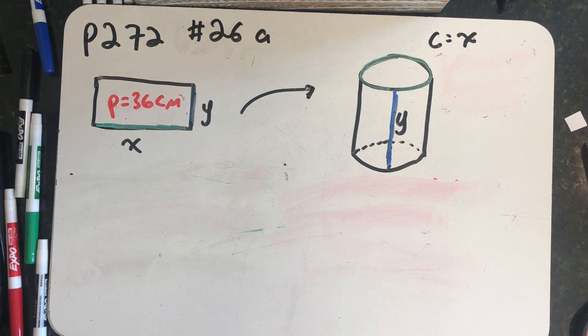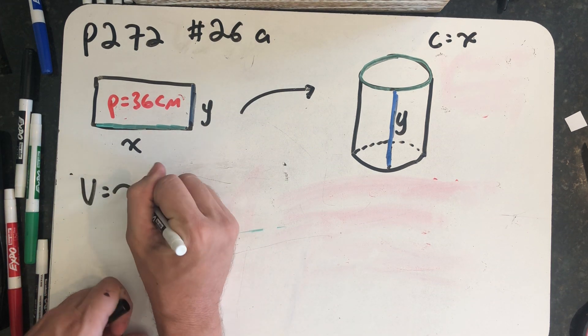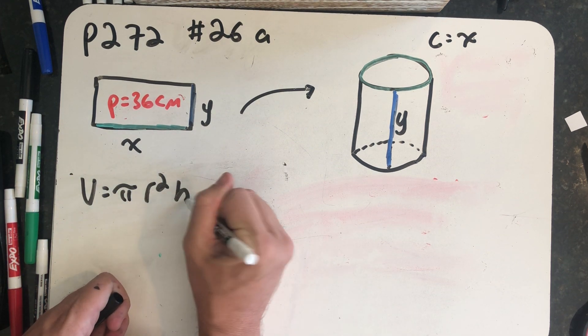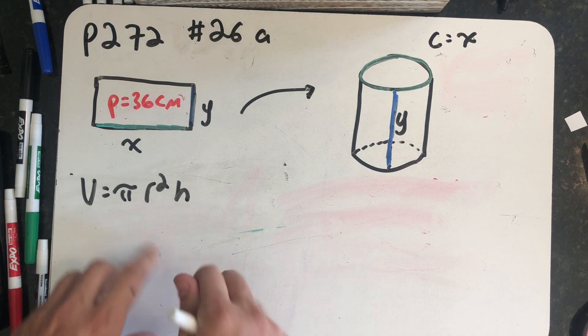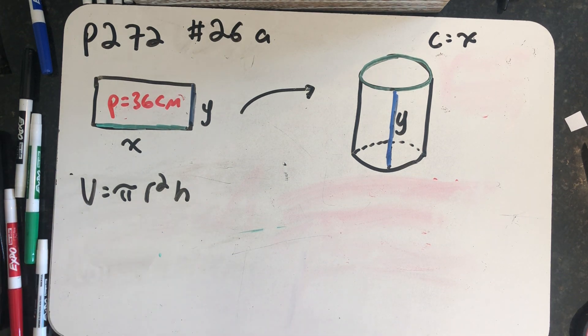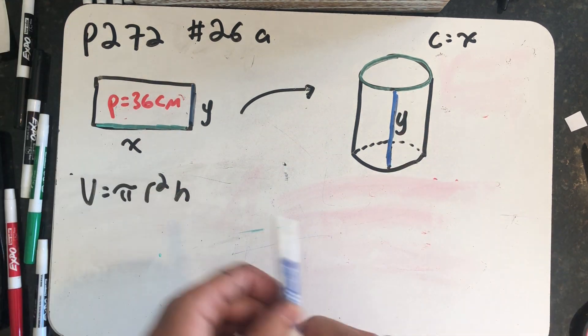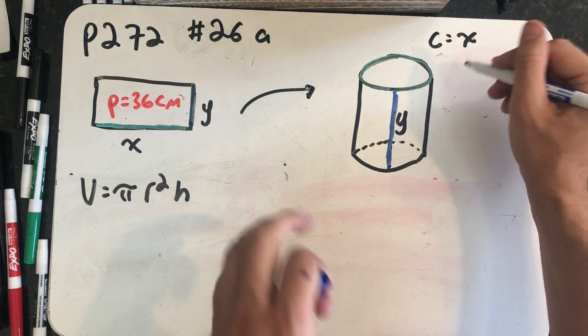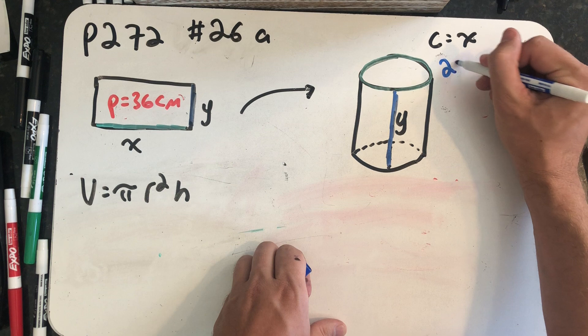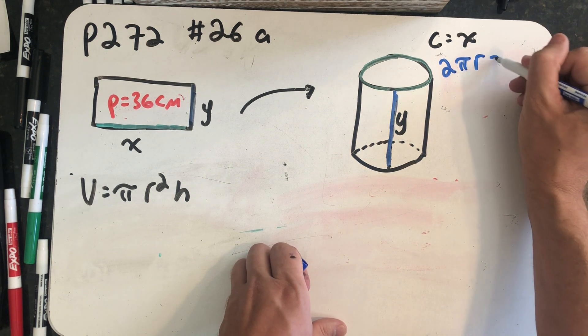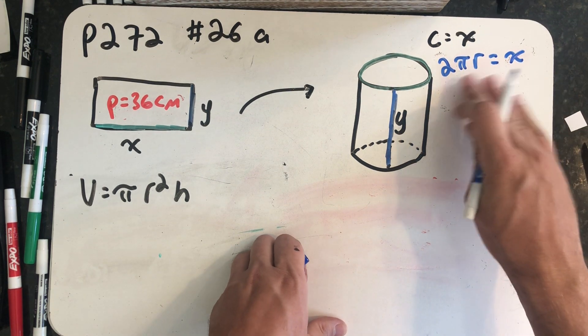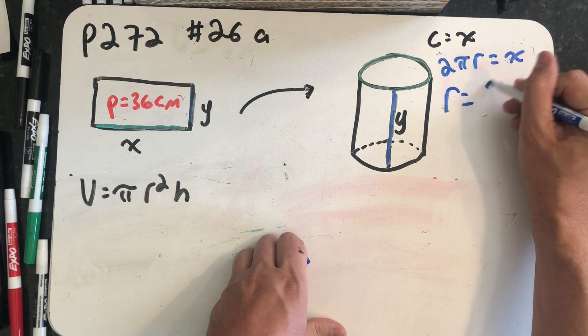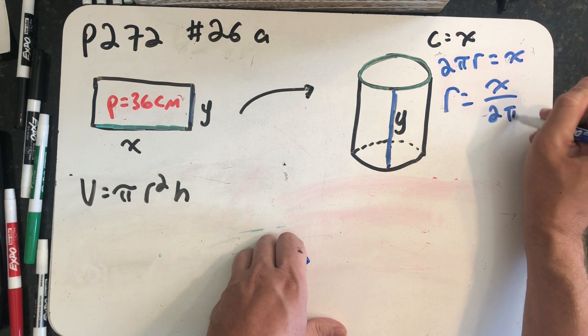The volume of a cylinder we know is π times r squared h. So I need expressions to plug in for r and h. The height is y and the radius I'll have to get from the circumference. I know the circumference of a circle is 2πr. Our circumference is equal to x, so 2πr equals x, telling me the radius is x over 2π.